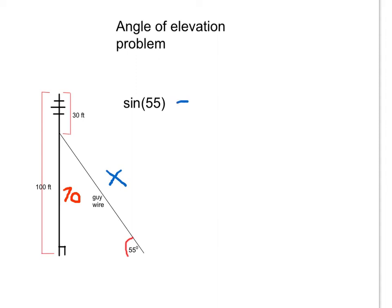So the sine of 55 equals the opposite, which is 70, over the hypotenuse, which is x.